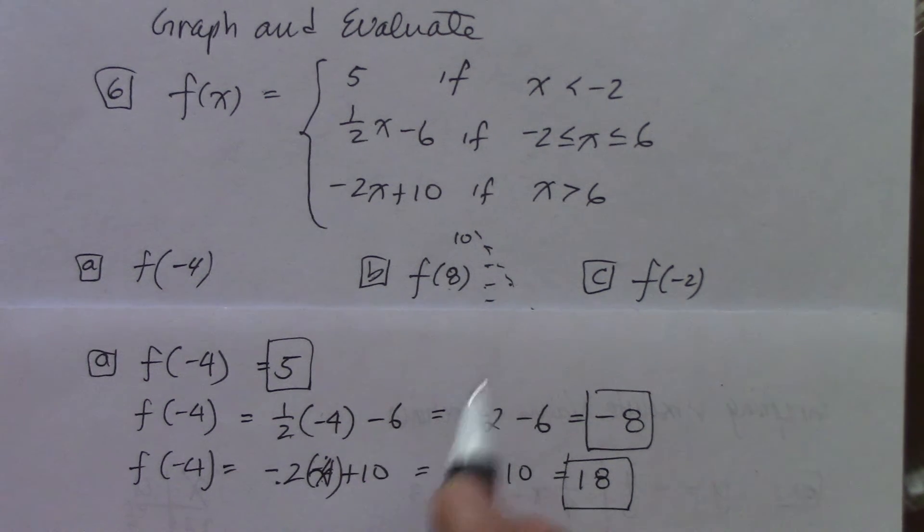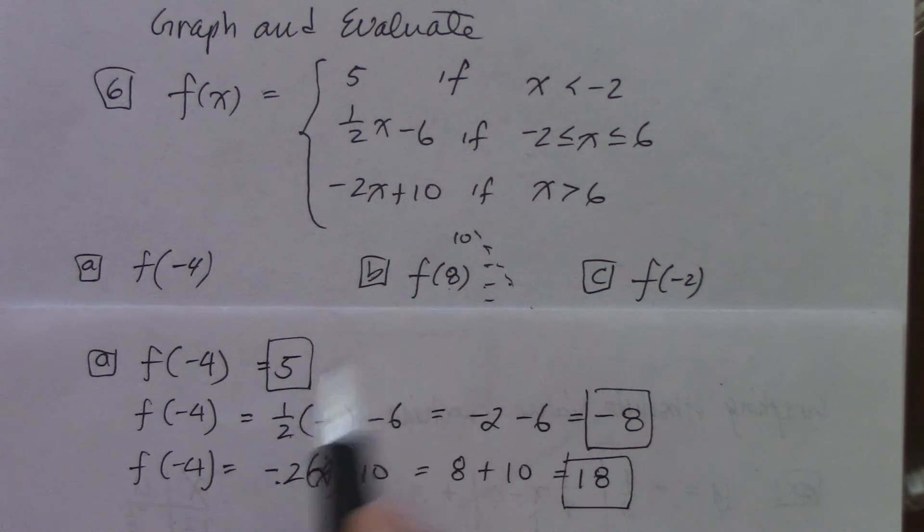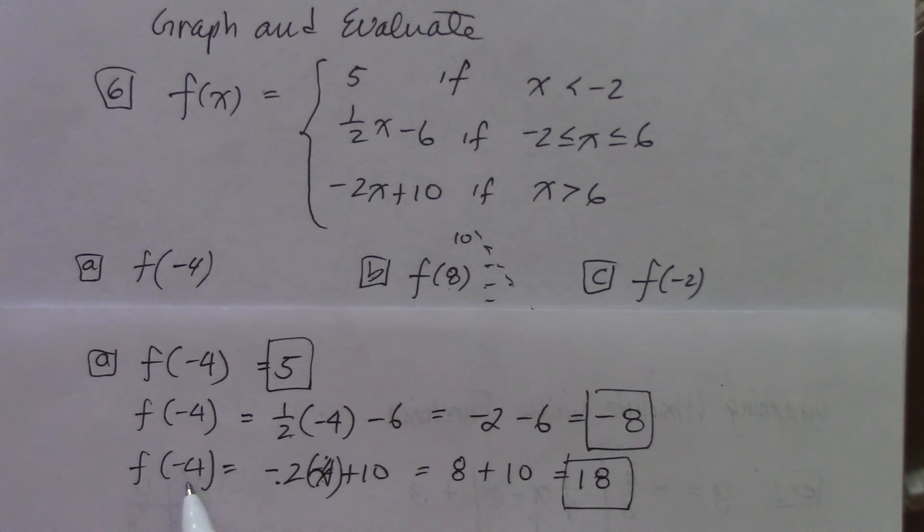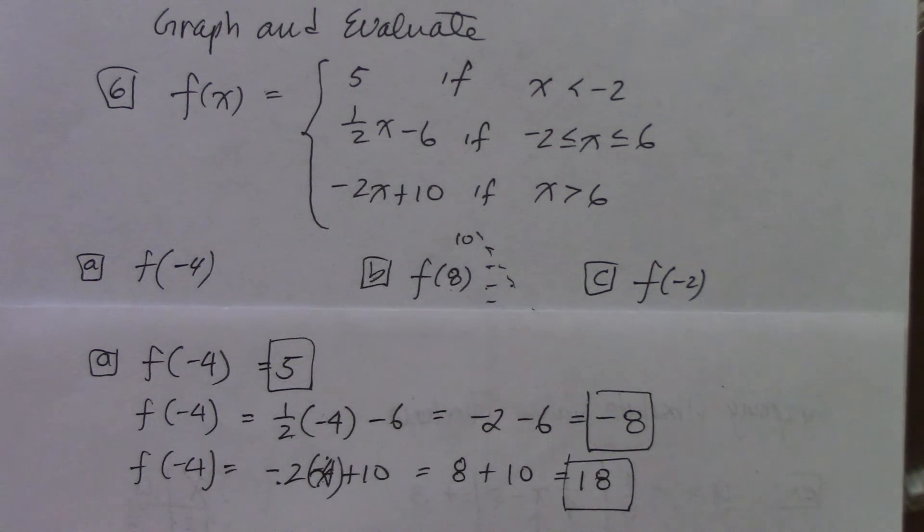So you do the same thing with the b. So you're going to put 8, 8, 8 and do it again, and negative 2 and negative 2, negative 2 and do that again. And that completes your assignment. All right, good luck with that, boys and girls.